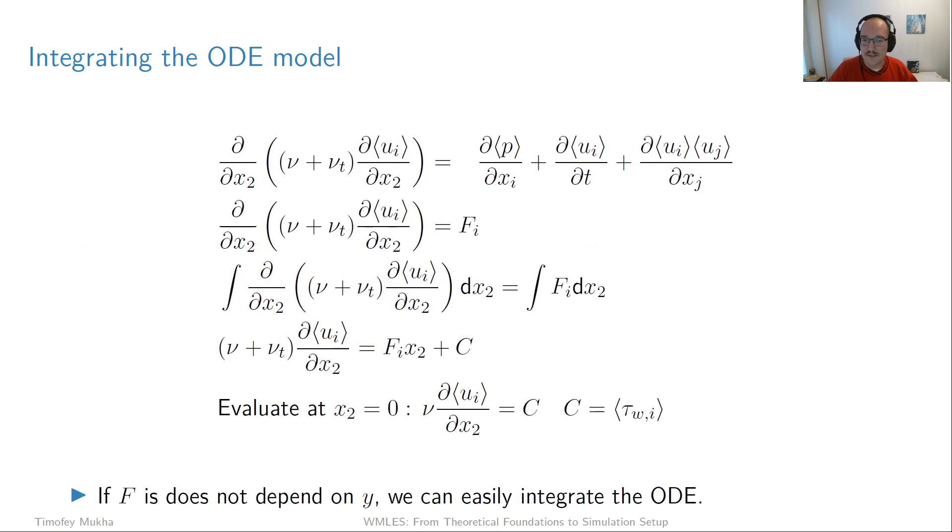In the simplest case when we only have one ODE based on momentum, which is the case for incompressible flow, we can actually integrate the ODE to get rid of the wall normal derivative as well. Let's contract the right-hand side to something we call Fi, which is independent of x2, x1, and x3—it's just a constant. We either sample or ignore these terms. When we integrate in the wall normal direction, we put an integral sign for both sides.